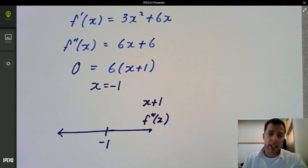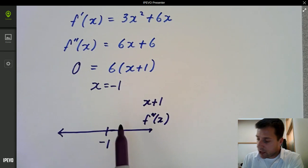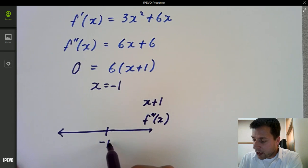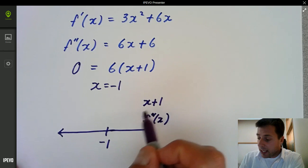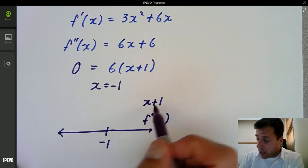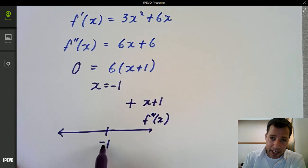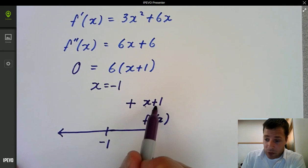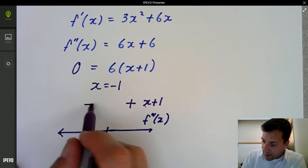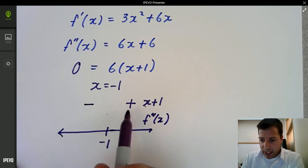Now, in order to have a point of inflection, we want to see a sign change here. So if I plug in a number greater than negative 1, like 0 or 1 or 2, I'm going to get something that's positive here. If I plug in something that's less than negative 1, negative 2, negative 3, like negative 3 plus 1 is negative 2, it's negative. And notice the sign change.